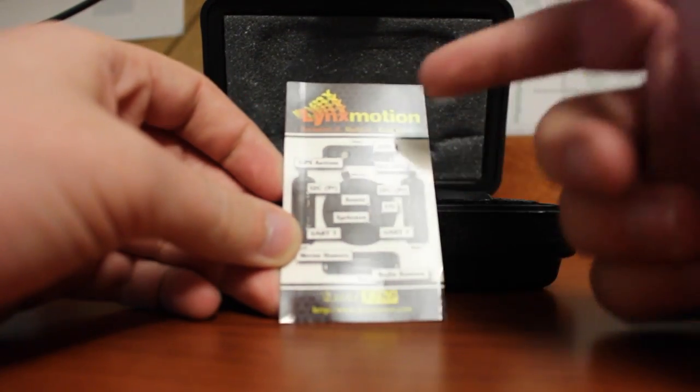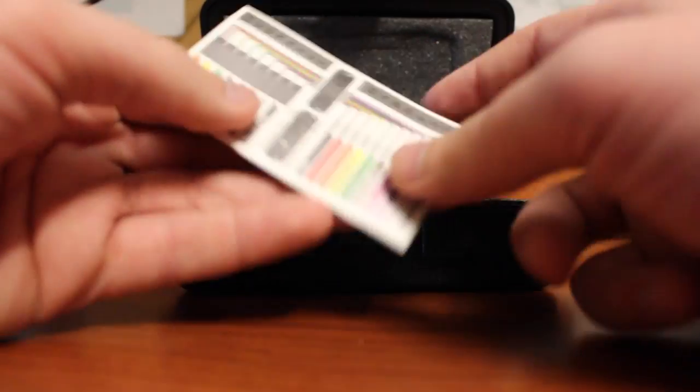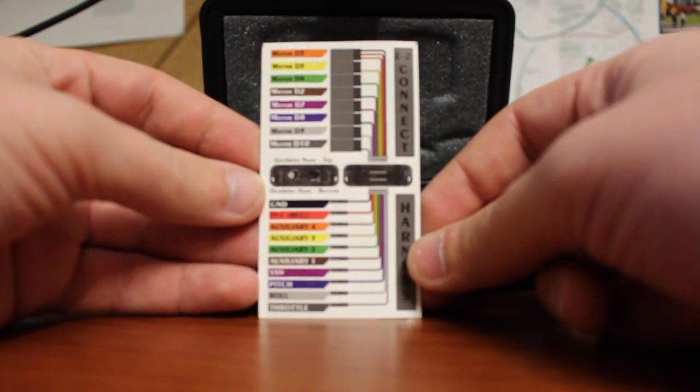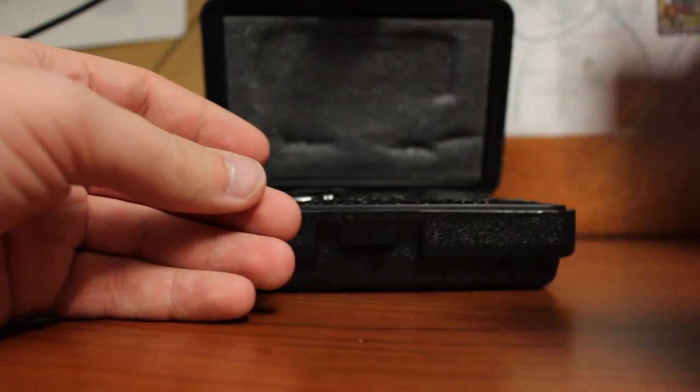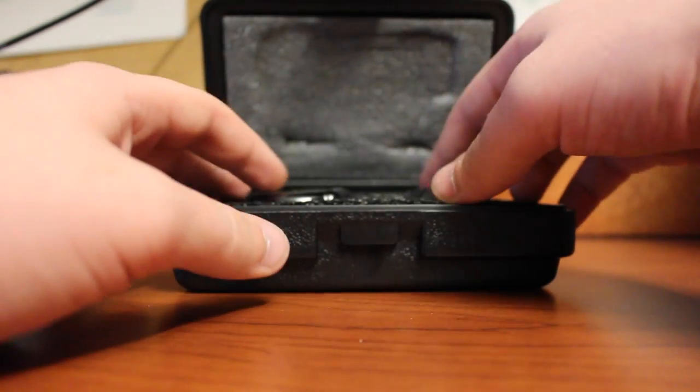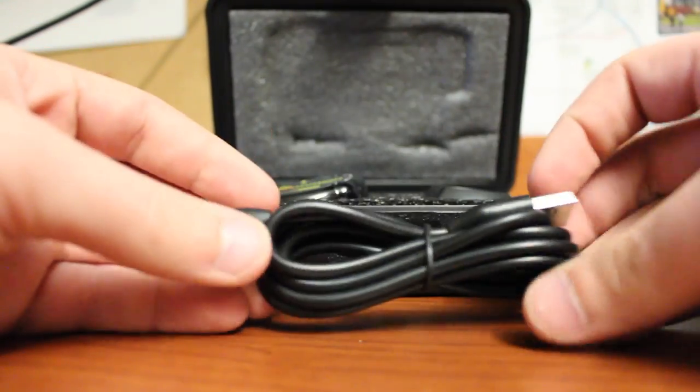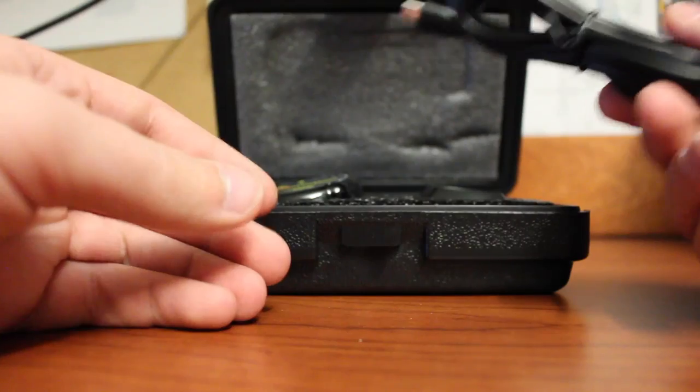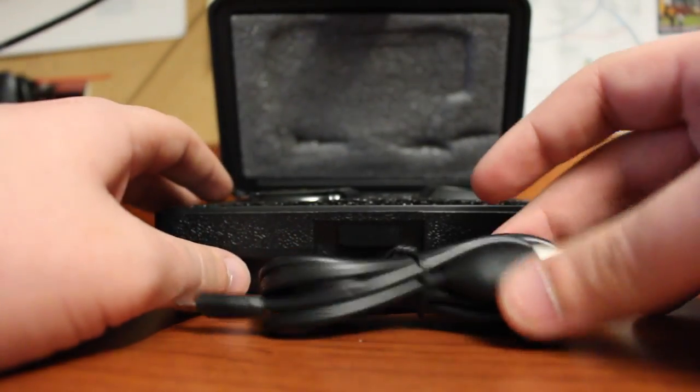And a quadrino diagram that shows all the different outputs and inputs and the wiring on the back for the different servos and whatnot. Inside the box we get a micro USB cable that I would assume would be used to connect to the computer and configure.